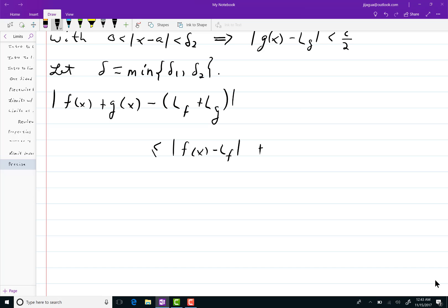plus the absolute value of g of x minus l sub g. And that is less than epsilon over 2 plus epsilon over 2. This is because when I chose the delta to be the minimum between these two,